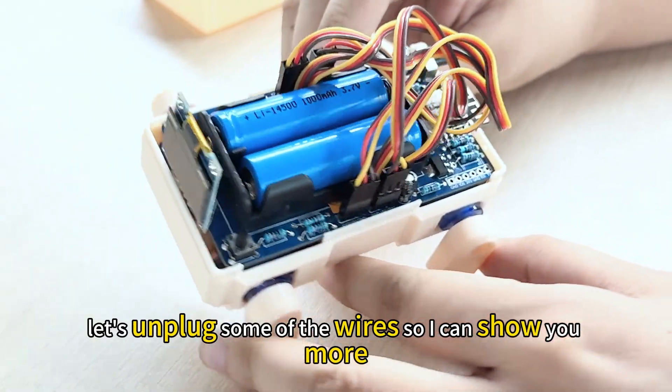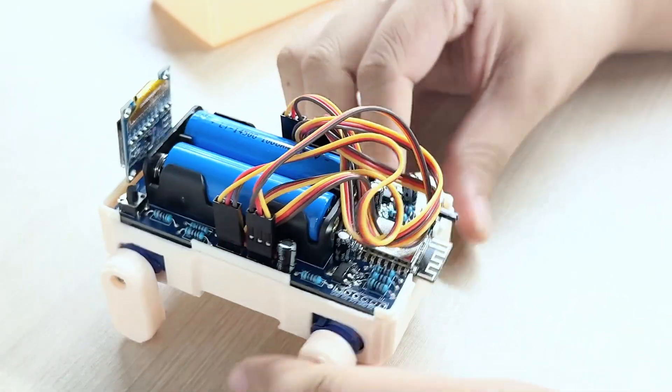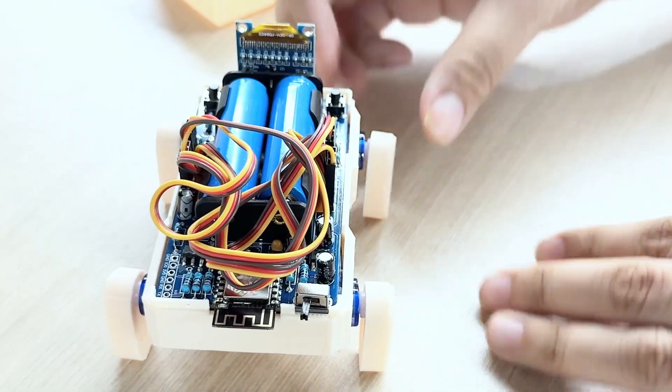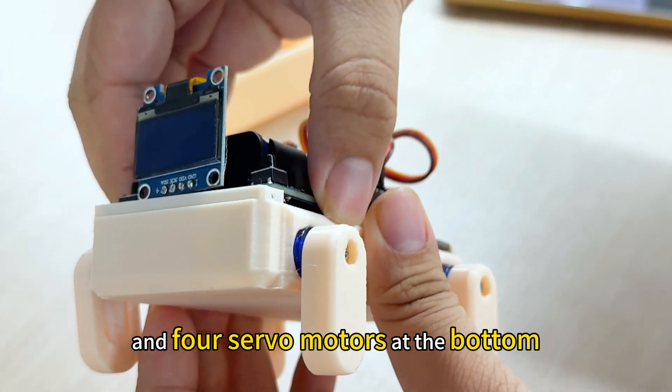Let's unplug some of the wires so I can show you more clearly. There's just a few capacitors, a voltage regulator chip, and 4 servo motors at the bottom.